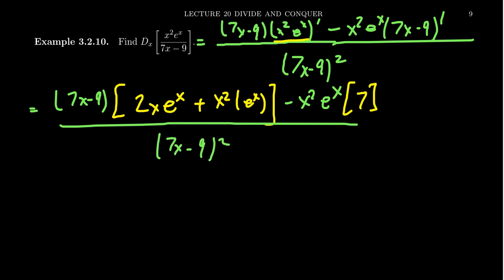Don't be tempted to cancel out this 7x minus 9 with any on the denominator. That's not valid because the only way we could cancel 7x minus 9 from the denominator is if the entire numerator were divisible by 7x minus 9, for which this has no 7x minus 9 factor to contribute. So don't fall into that temptation.